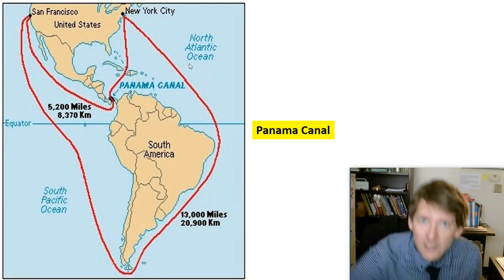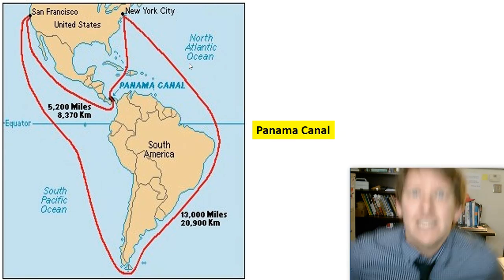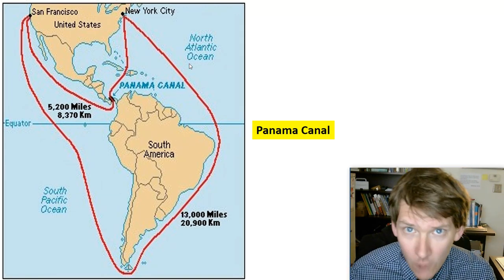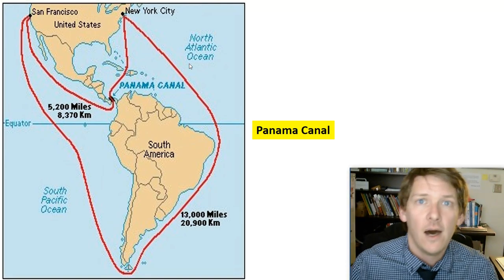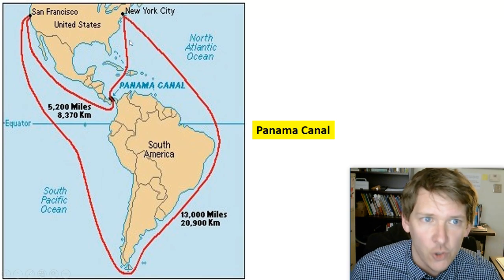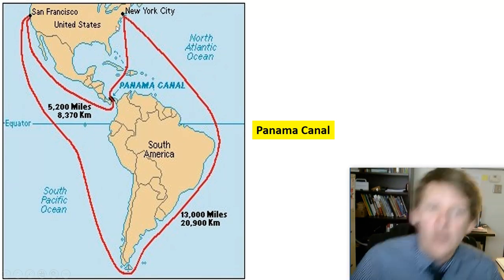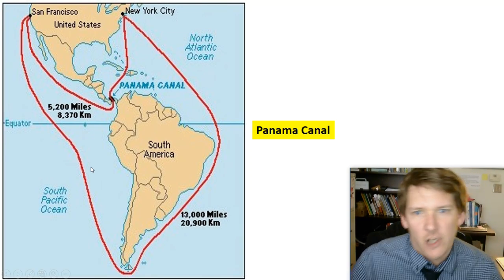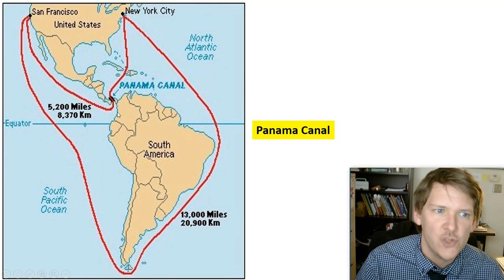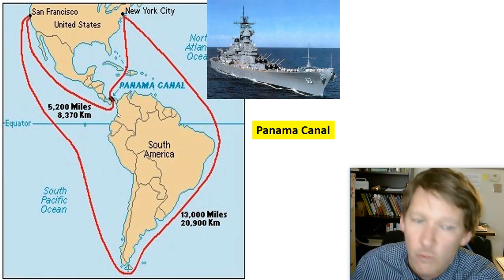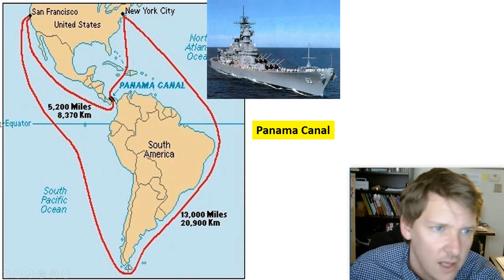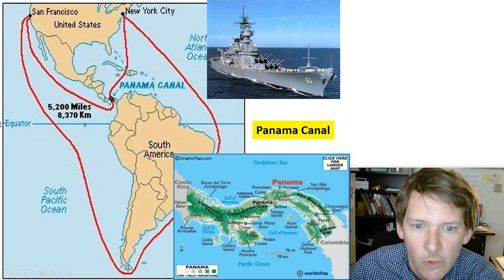Let's switch over to the other side of the earth and talk about the Panama Canal. We talked in the previous video about Captain Alfred Thayer Mahan saying here's how you take over the world: strong navy, check; conquer a bunch of islands, check. We also need a shorter way around the world. Right now, going from New York to San Francisco pre-Panama Canal is 13,000 miles. But if you carve a little passageway, you could cut it in half — that would really help our navy get from coast to coast.